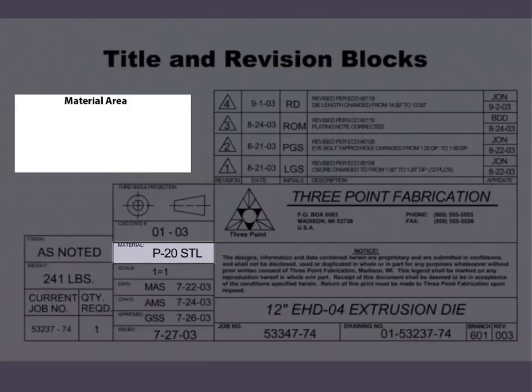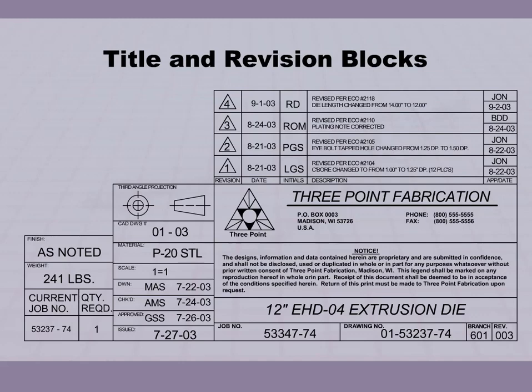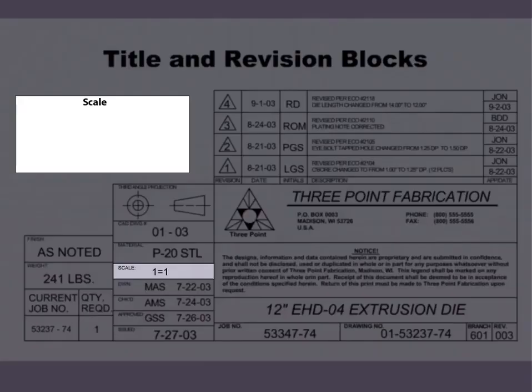The materials area in the title block signifies the material used to make the part. The scale is the ratio between the part as drawn and the actual part.